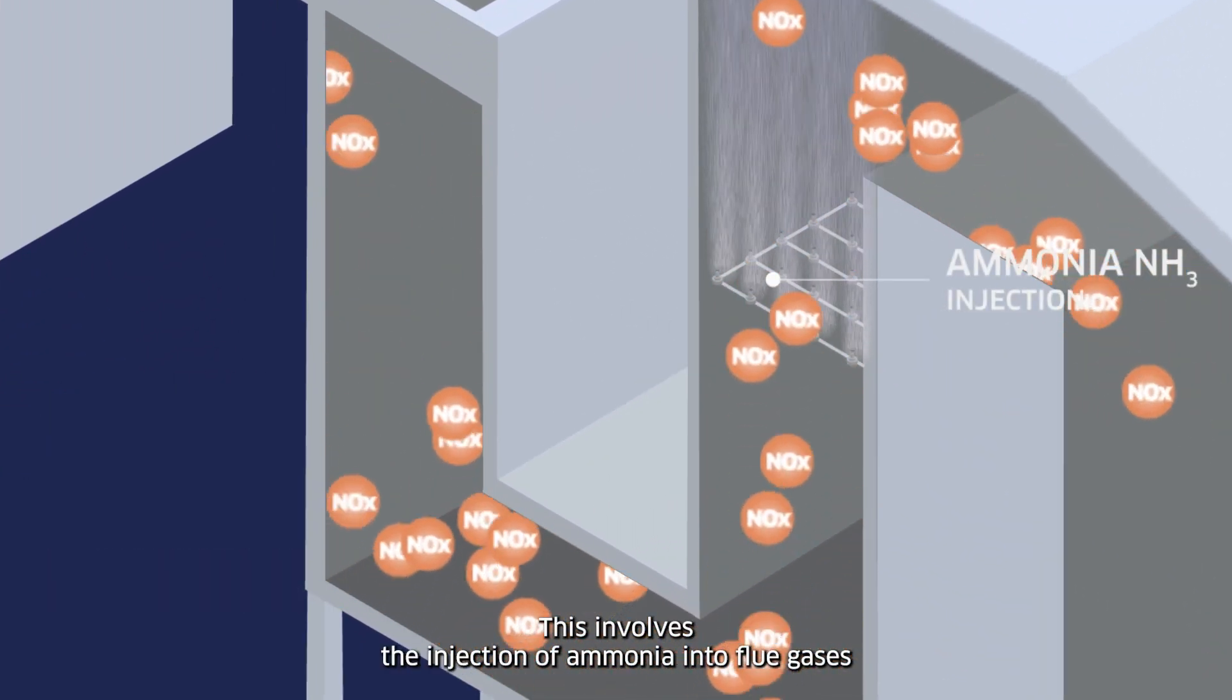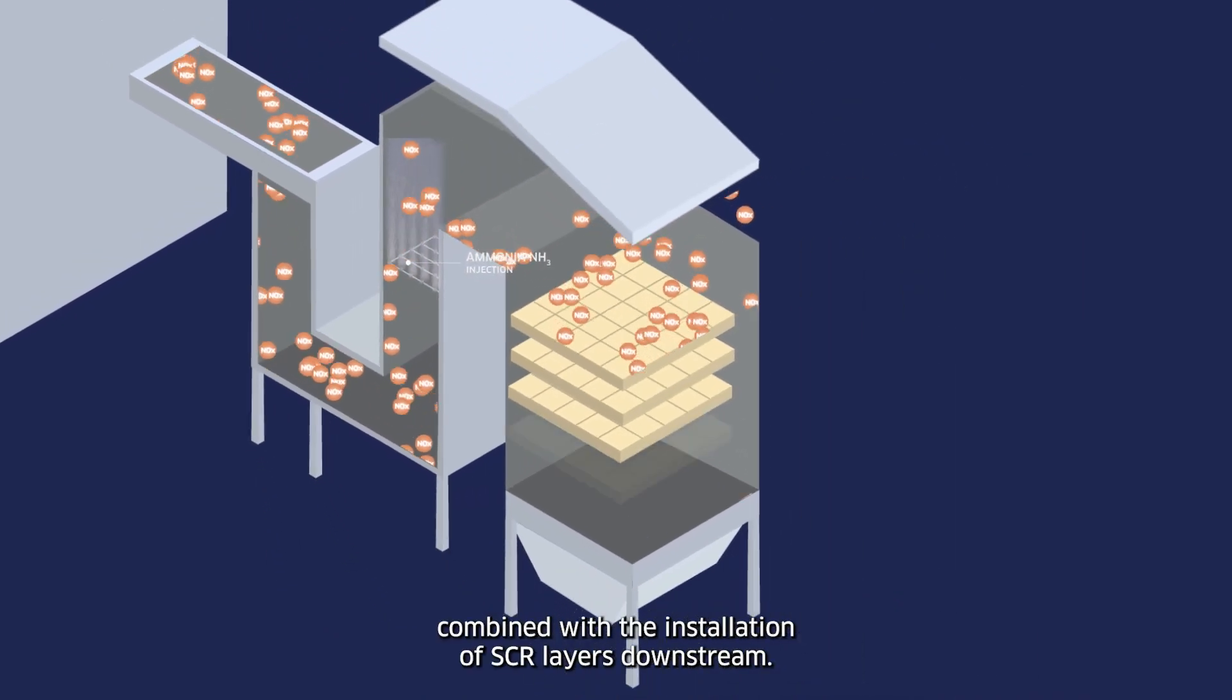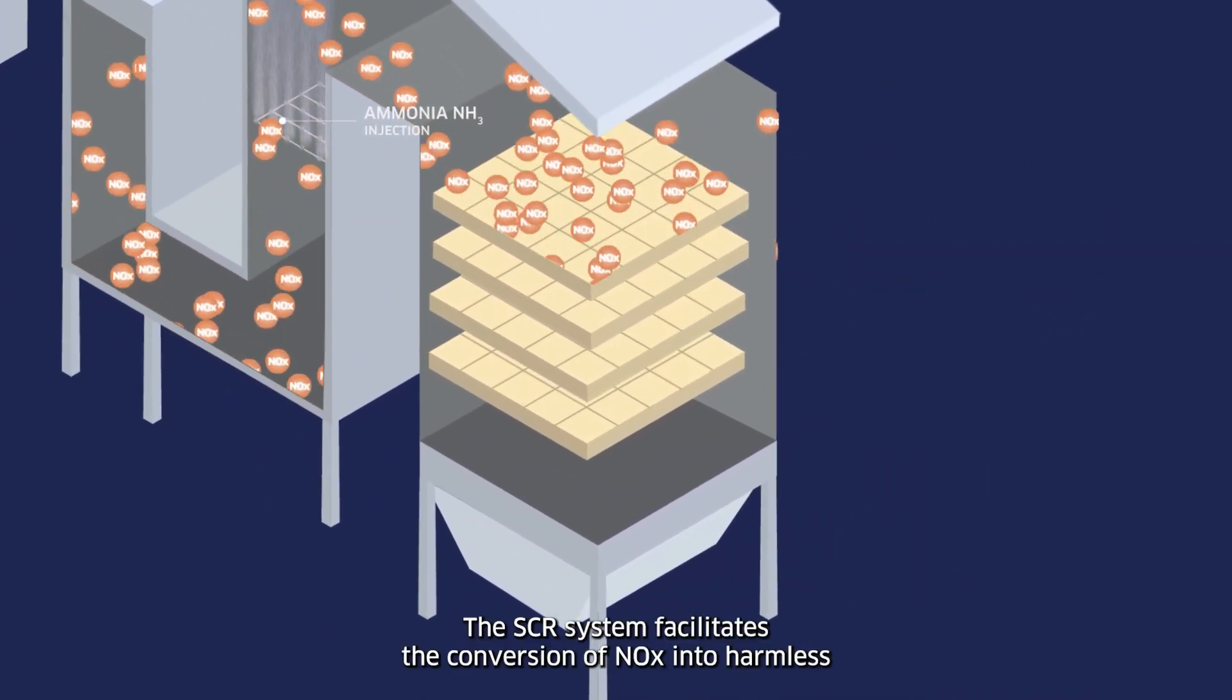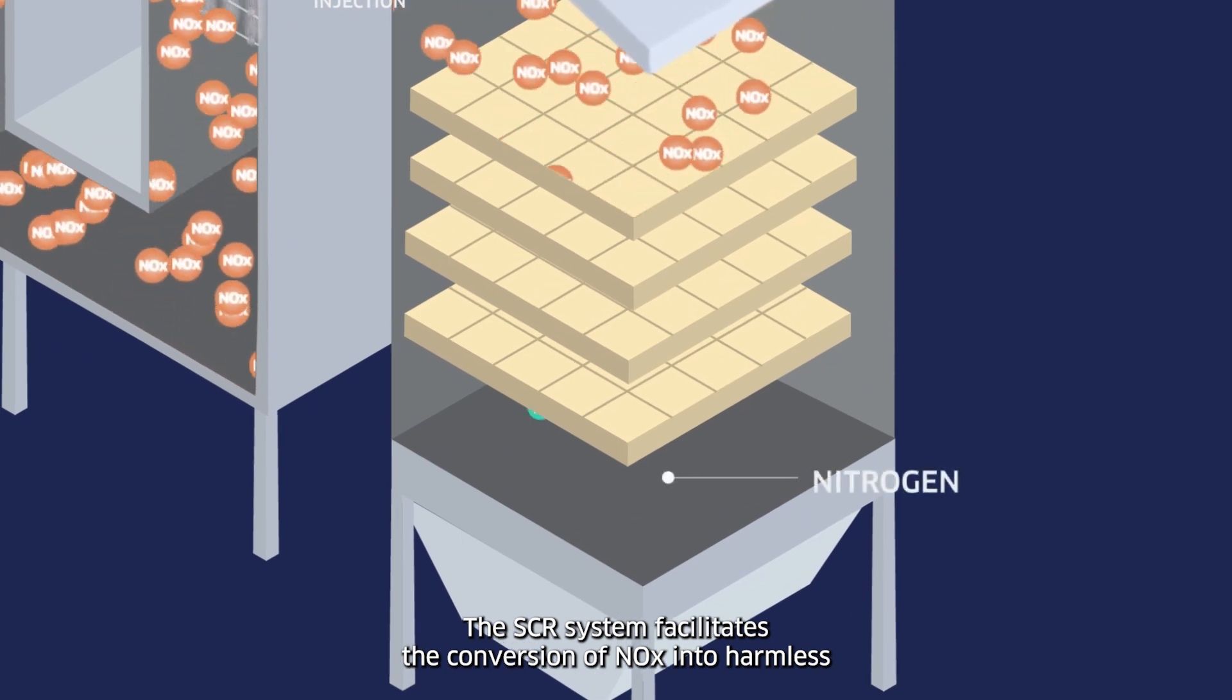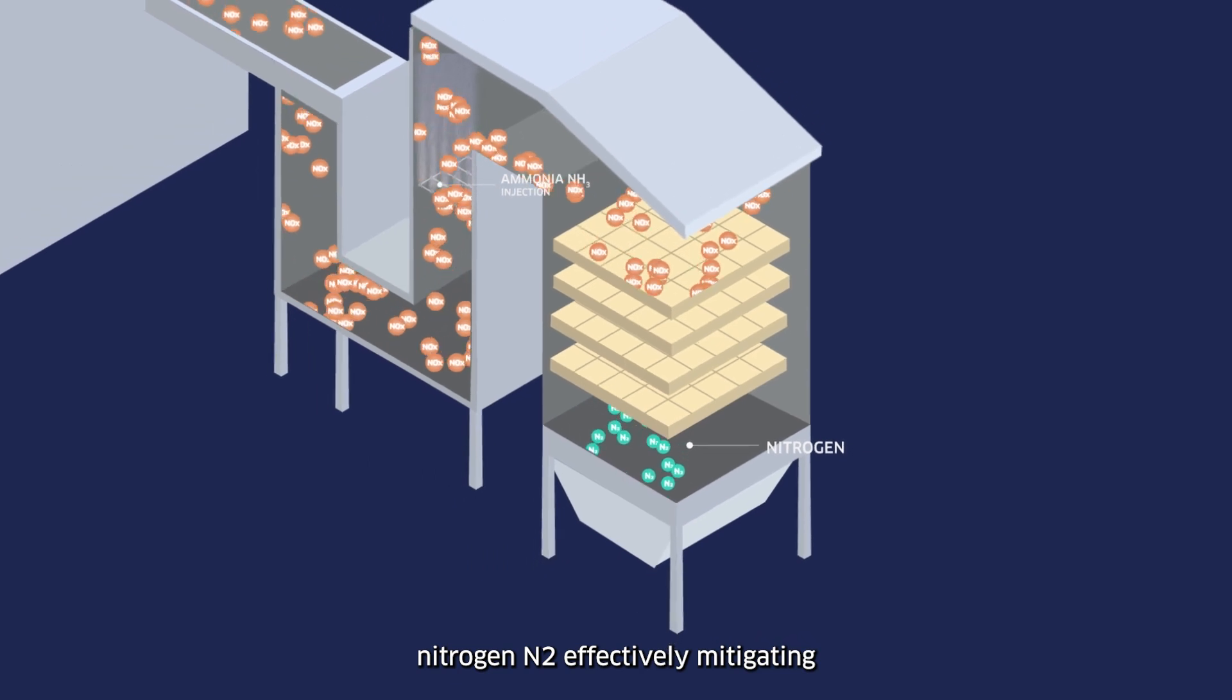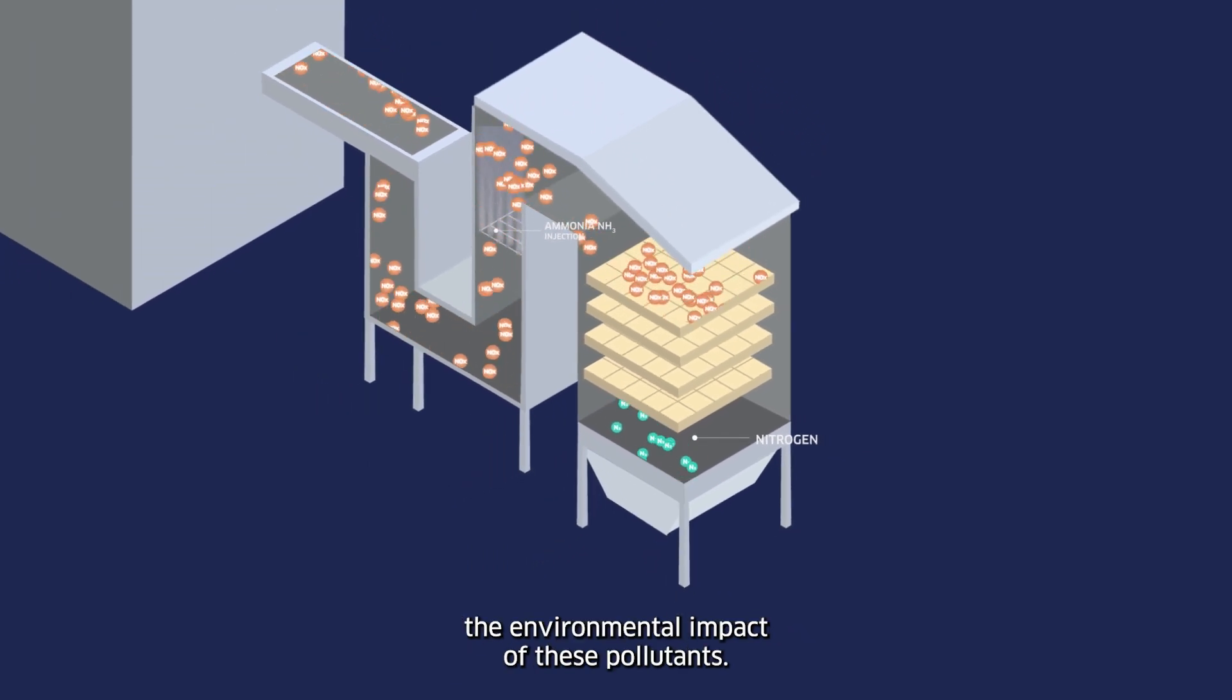This involves the injection of ammonia into flue gases, combined with the installation of SCR layers downstream. The SCR system facilitates the conversion of NOx into harmless nitrogen, N2, effectively mitigating the environmental impact of these pollutants.